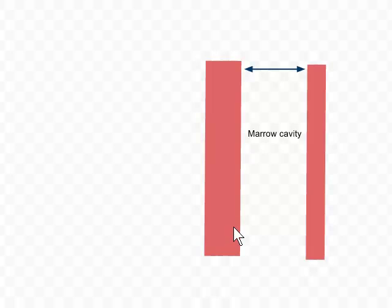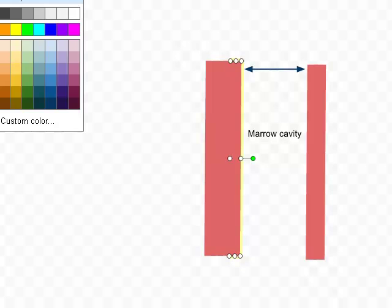Having secreted that bone, let's now allow osteoclasts to resorb some bone from the internal surface, but not as much bone as has just been deposited on the external surface. So, there's some bone resorption has taken place.